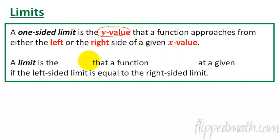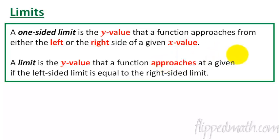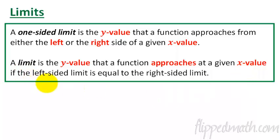A limit is the y value that a function approaches at a given x value, if the left-sided limit is equal to the right-sided limit. So a limit exists if the left-sided and right-sided limits are the same. If they're different, then there is no limit.